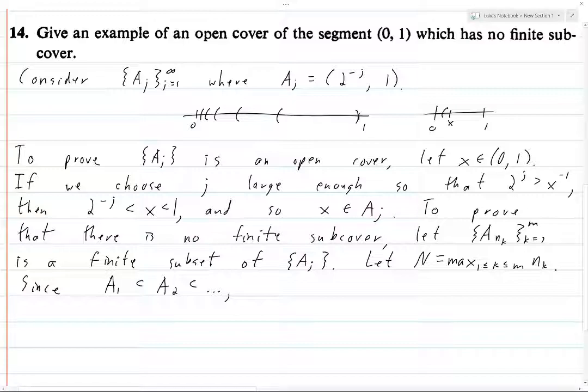We have this fact that this is an increasing collection of sets. And so we know that the union from k equals 1 to m of a n k is equal to a sub-capital n. Because all of the a n k's are going to be contained in the a n k that maximizes n k, if that makes sense. So right, so we have this.